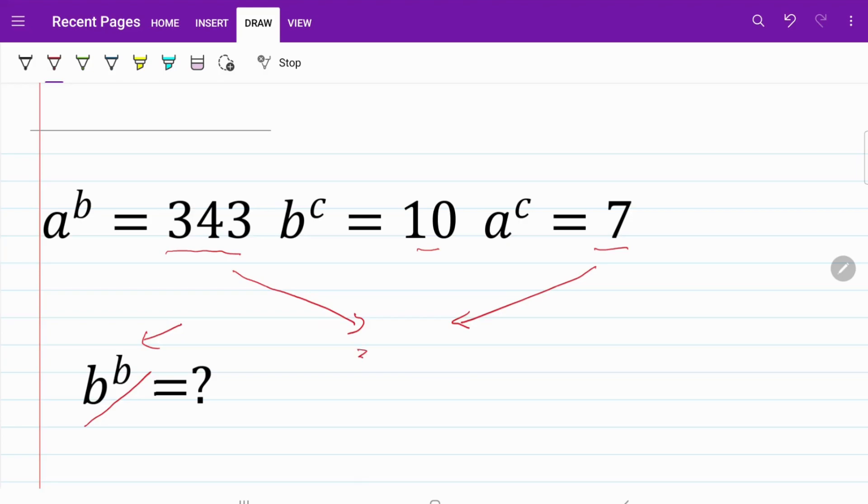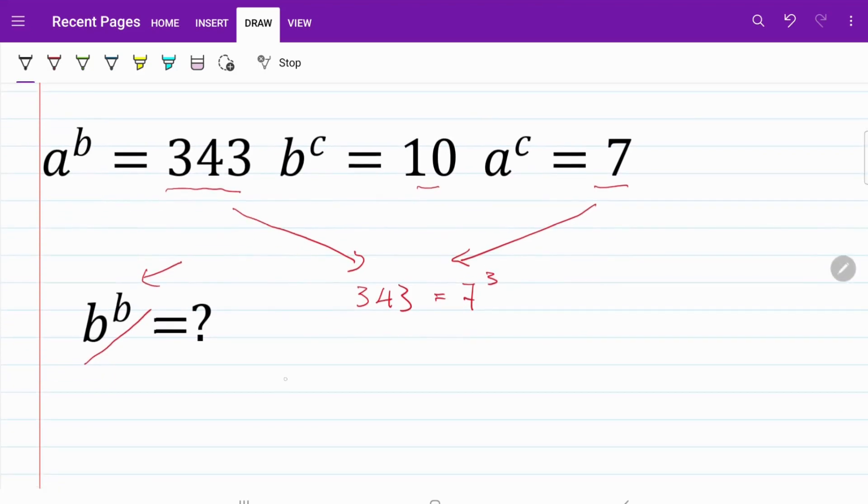Basically I can write 343 as 7 cubed. In other words, a^b and a^c are linked. I can write a^b equal to 343 equals to 7 cubed.